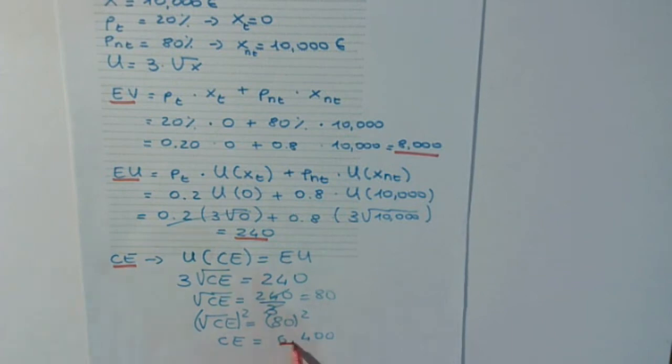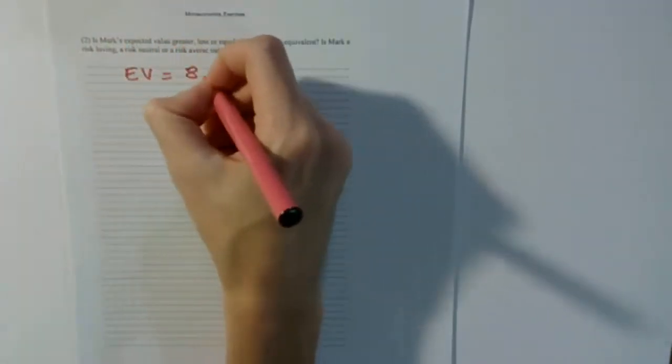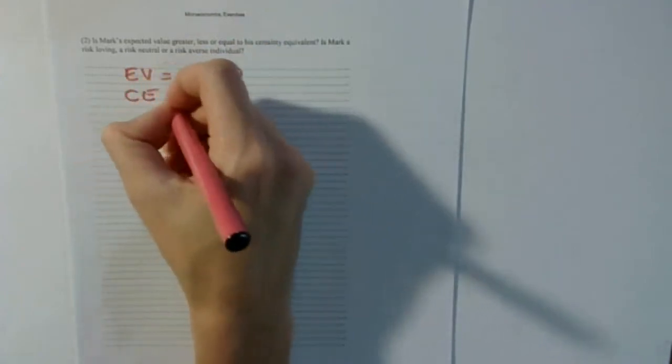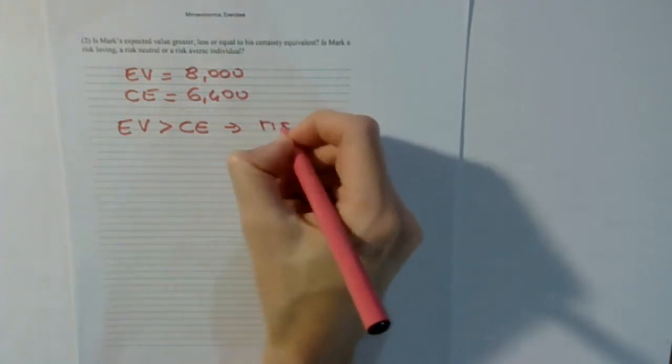That's the result for part 1. Now for part 2: is Mark's expected value greater, less, or equal to his certainty equivalent, and is Mark risk-loving, risk-neutral, or risk-averse? We have EV equals 8,000 and certainty equivalent equals 6,400. EV is larger than the certainty equivalent, and this is typical of a risk-averse individual.